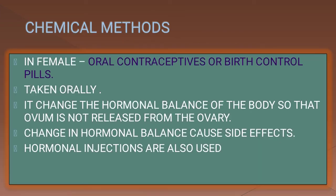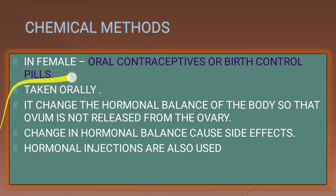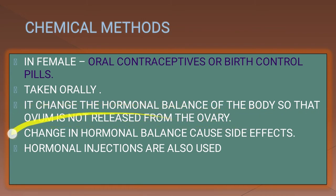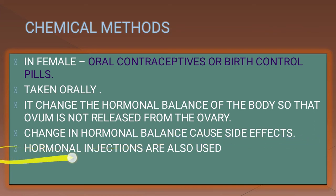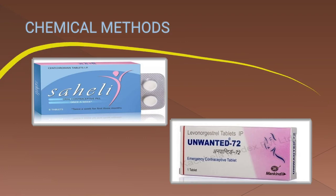The chemical method for females involves oral contraceptives or birth control pills, which are taken orally. These pills change the hormonal balance of the body so that the ovum is not released from the ovary. Changes in hormonal balance can cause side effects. Hormonal injections are also used. These are some examples of oral contraceptive pills.